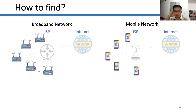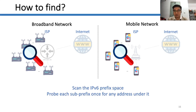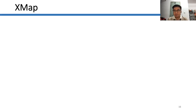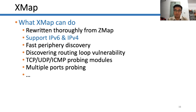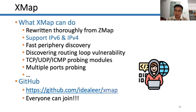Now we can find one periphery. To discover all peripheries within an AS number, we propose to scan the IPv6 prefix space — probing each sub-prefix once for any address under it. Then, based on ZMap, we developed XMap. XMap is rewritten thoroughly from ZMap and supports both IPv6 and IPv4 with more functions. We also implement our first IPv6 periphery discovery method into XMap, as well as multiple probing modules. XMap is also compatible with ZMap, and everyone can join and use it.